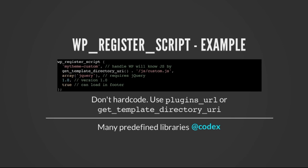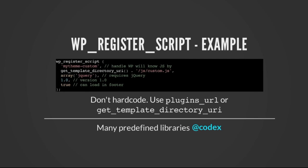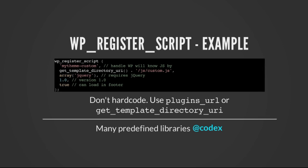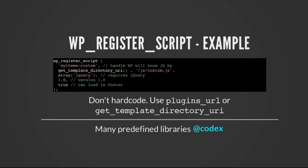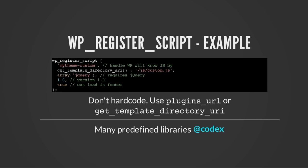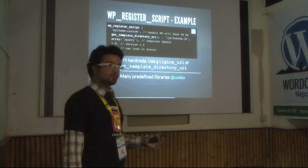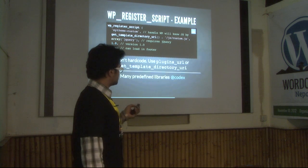There are a couple of things to remember. We should always use `get_template_directory_uri()` for templates and `plugins_url()` for plugins. Why? Because if we hardcode paths, most of us have very different WordPress configurations and folder structures, and if we just hardcode `../../plugins`, things will go really wrong. And there are lots of predefined libraries in WordPress like jQuery, Mootools, jQuery Form, jQuery Color, and many more.